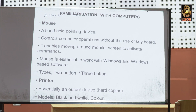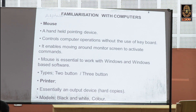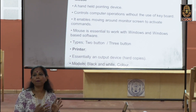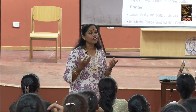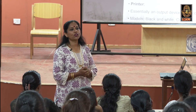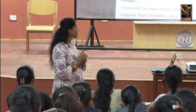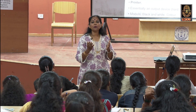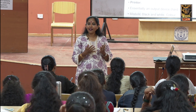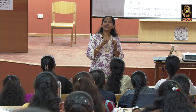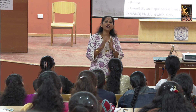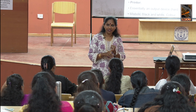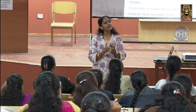Printers were explained in the previous class. A printer is an output device. It is classified into two types: impact and non-impact. Under impact, you have dot matrix and daisy wheel printers. Under non-impact, you have inkjet printers, laser printers, and thermal printers.